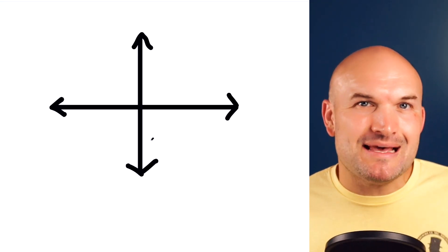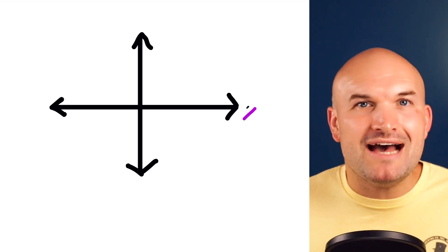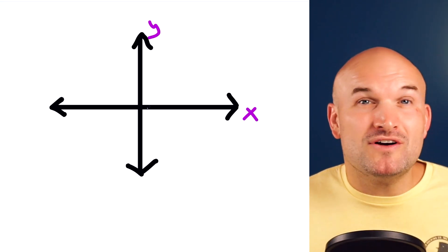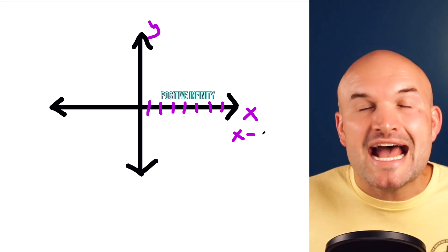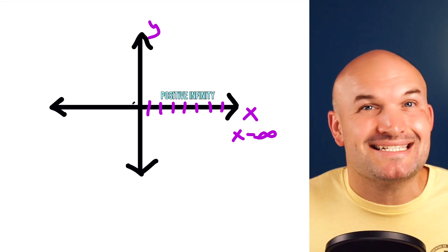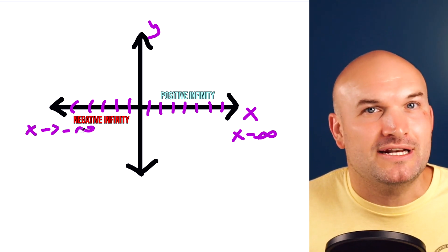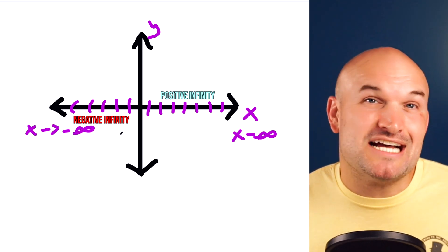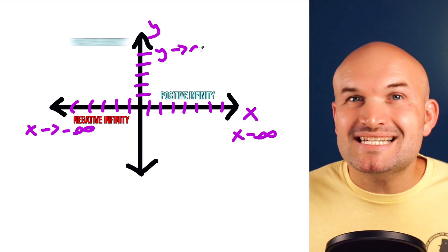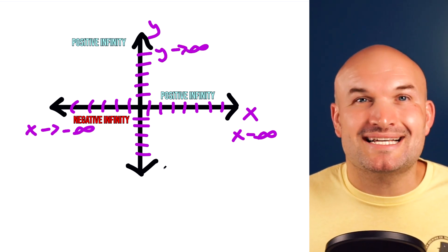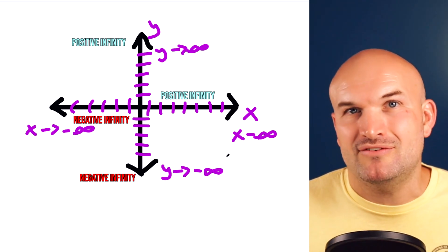Moving on to understanding the limits, let's go back to the graphing portion. When we have an x and a y-axis, it's important to understand that as we keep going we're going to approach positive infinity. As we move along the x-axis in the negative direction, we're going to start approaching negative infinity. As we move along the y-axis going up, we approach positive infinity, and going down we approach negative infinity.